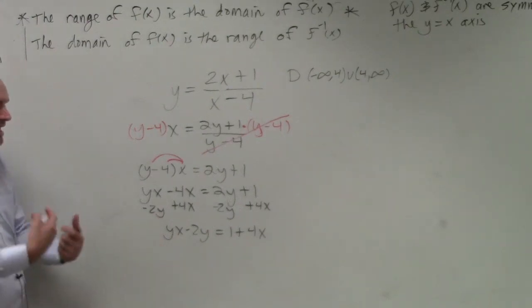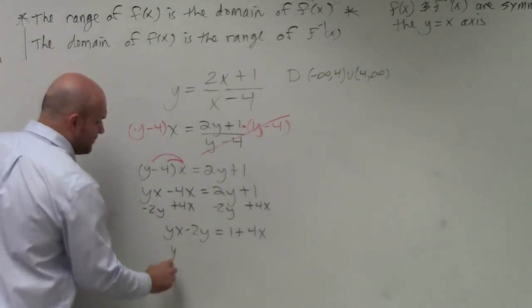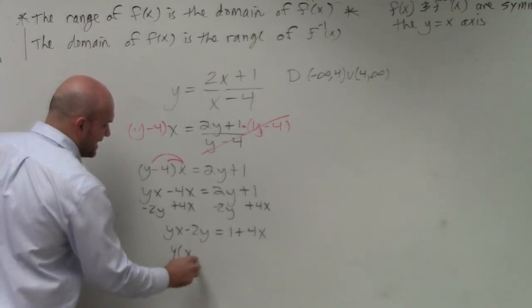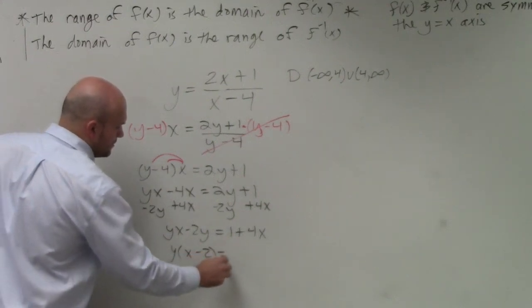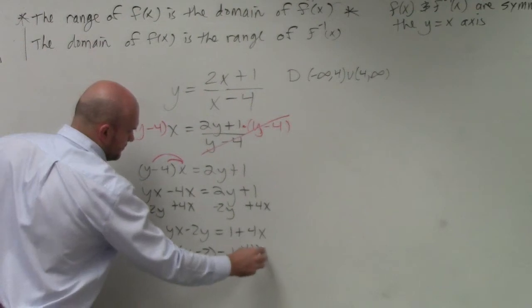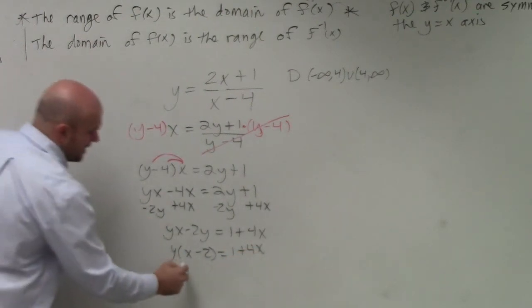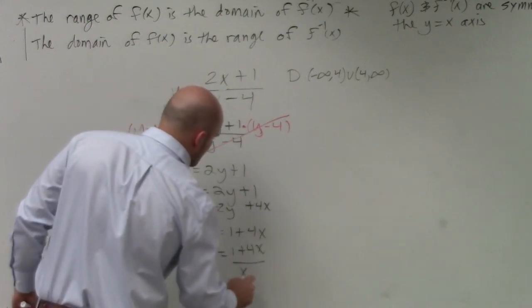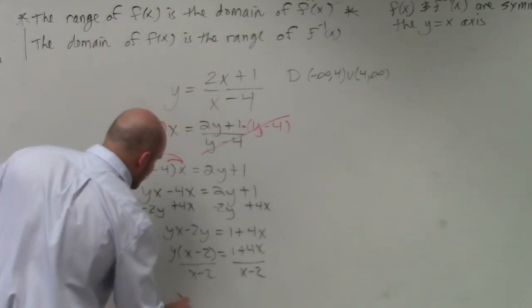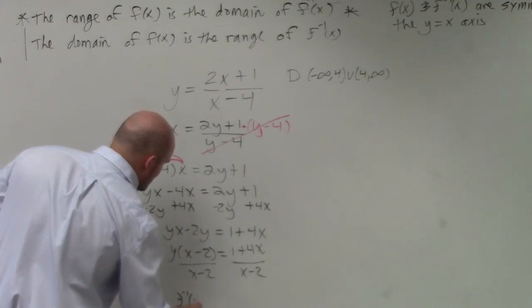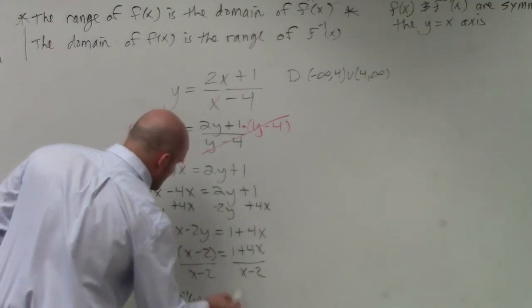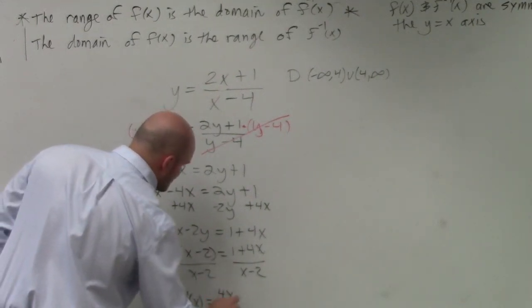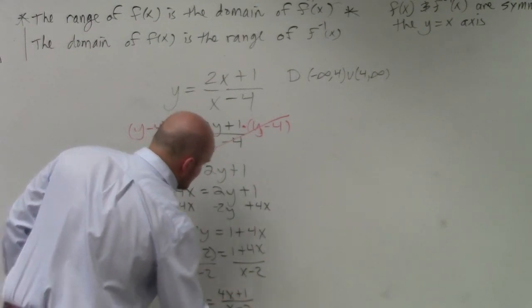So now, to get the y's separated, I factor out the y, which leaves me with an x minus 2. Now, to solve for y, I can divide by x minus 2. So my inverse function is f inverse of x equals, I'm going to rewrite this as 4x plus 1 over x minus 2.